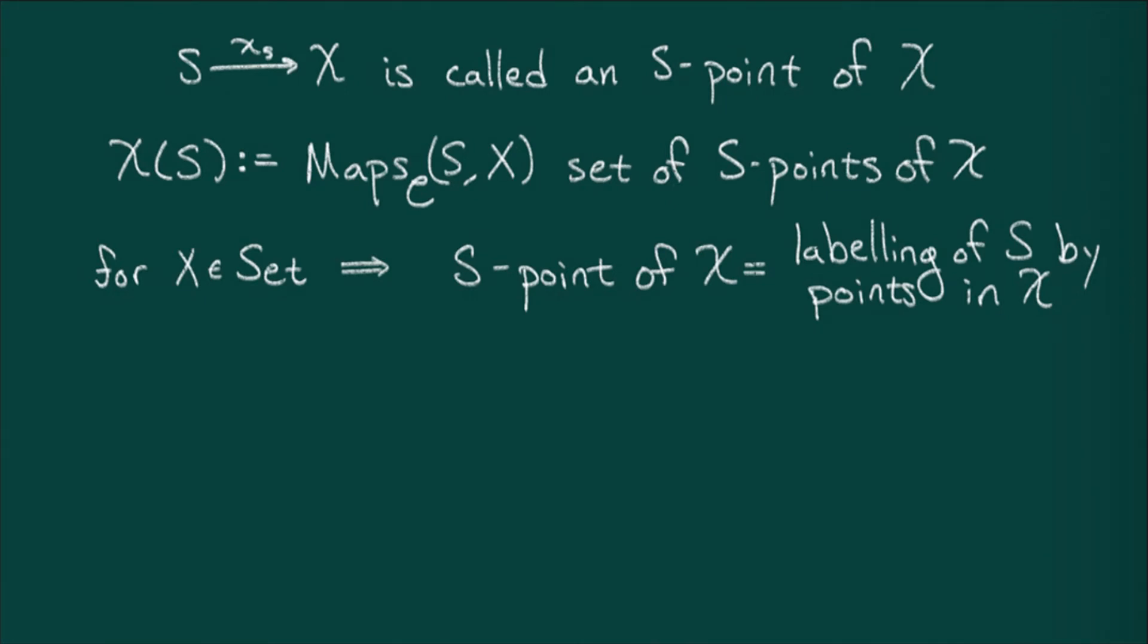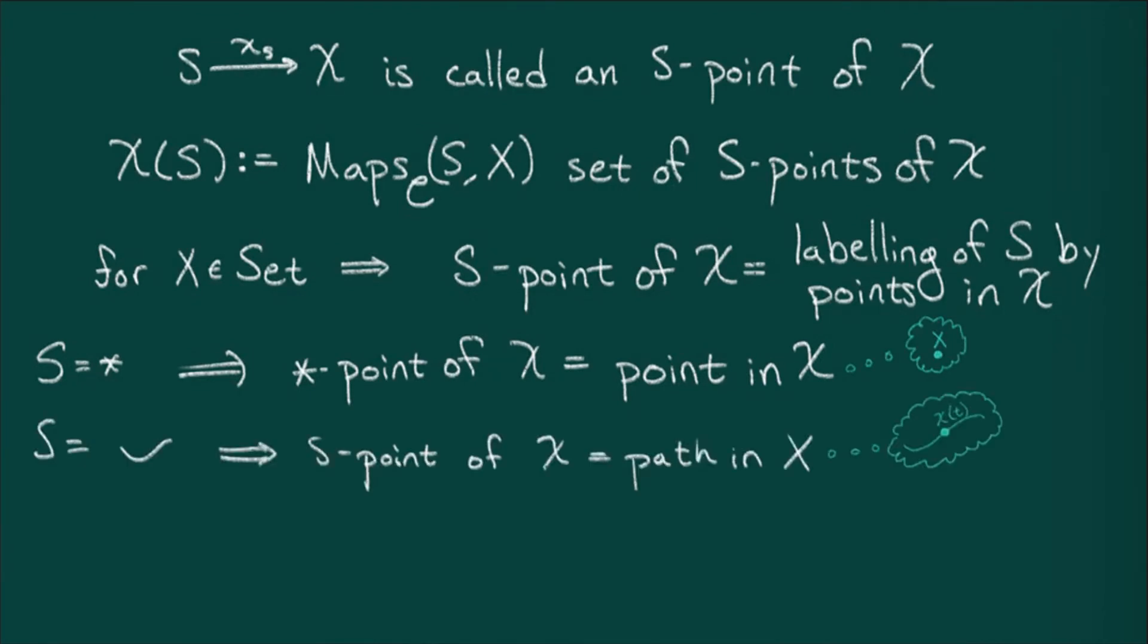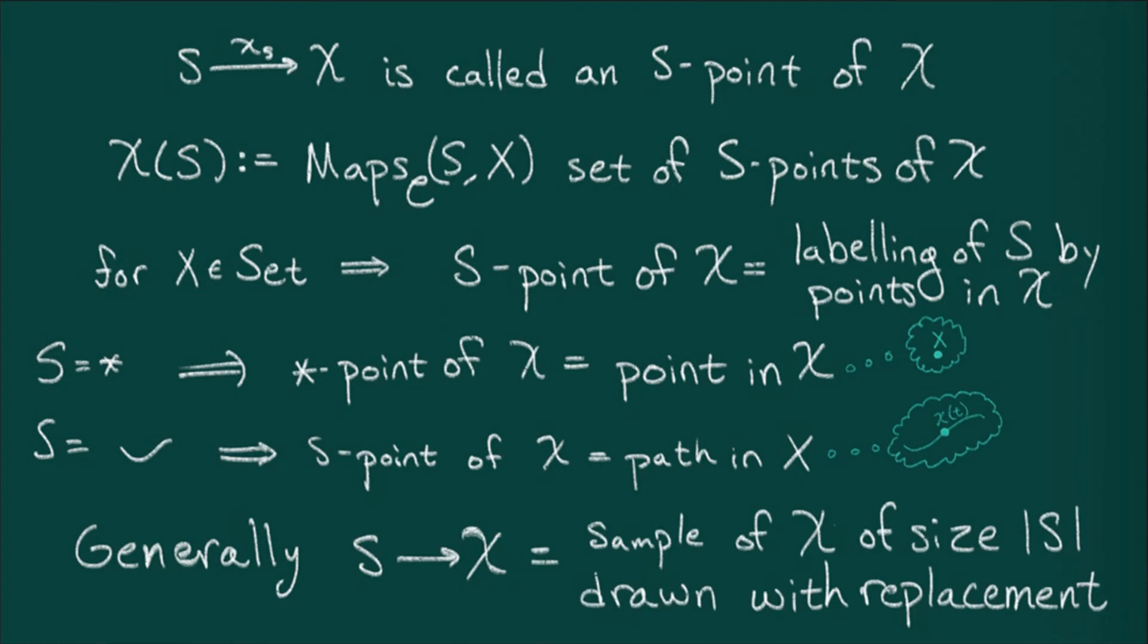Here, a point of s is labeled by its image under the s-point x sub s. So a common phrase is to say that an s-point of x is like a family of points of x parameterized by s. In some sense, you can think of s as sort of like a template or a motif. When s is a point, then a point point of x is just a point in x. When s is a line, then an s-point of x can be thought of as a path in x. One way you can think of an s-point of x is a sample of x of size whatever the cardinality of s is, drawn with replacement.